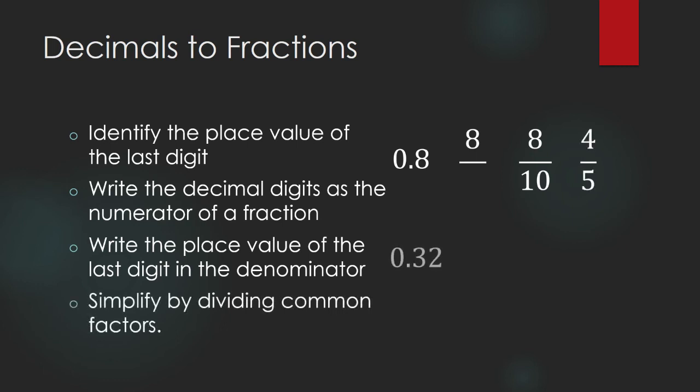How about this one? 0.32. Identify the place value of the last digit. The last digit is 2 and it is in the hundredths digit. Pay attention to that. Hundredths digit. So, we will write now the decimal digits as the numerator of our fraction and then we will divide this by the place value. 32 divided by 100.